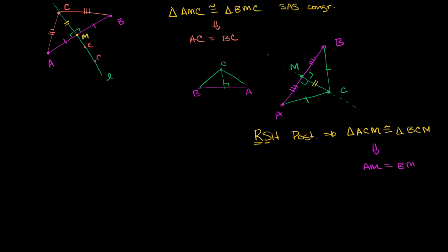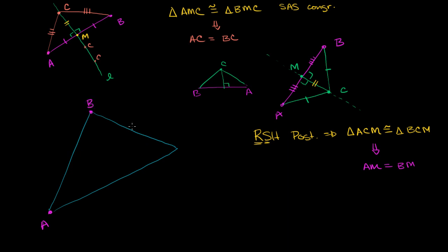So let's apply those ideas to a triangle now. Let me draw myself an arbitrary triangle — fairly large. Let's say that's a triangle of some kind. Let me give ourselves some labels: point A, point B, and point C. We could call this triangle ABC. Now let me just construct the perpendicular bisector of segment AB. So it's going to bisect it — this distance is going to be equal to this distance — and it's going to be perpendicular.